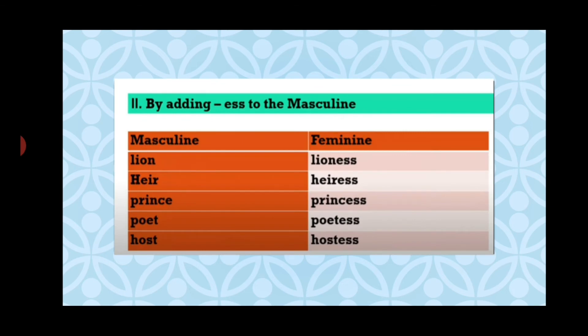The second way is by adding '-ess' to the masculine word to convert it to feminine. For example, lion becomes lioness; prince becomes princess; poet becomes poetess; host becomes hostess. So you understand how we change the masculine gender into feminine by adding '-ess'.